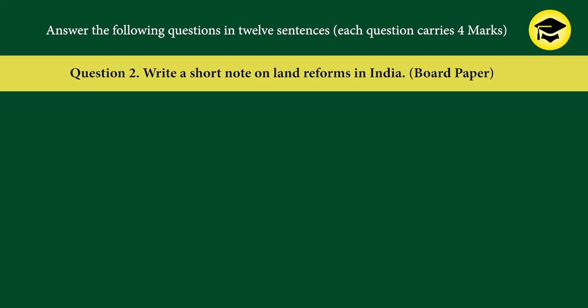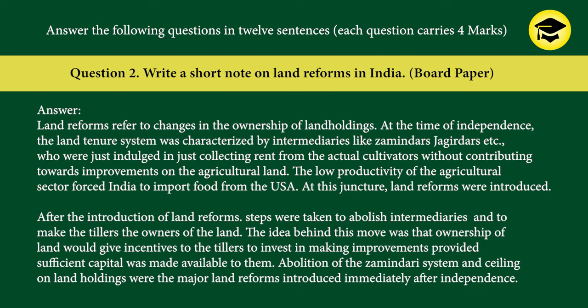Question 2: Write a short note on land reforms in India. Answer: Land reforms refer to changes in the ownership of land holdings. At the time of independence, the land tenure system was characterized by intermediaries like zamindars and jagirdars who were just collecting rent from actual cultivators without contributing towards improvements on the agricultural land. The low productivity of the agricultural sector forced India to import food from the USA. Land reforms were introduced to abolish intermediaries and make the tillers the owners of the land, giving them incentives to invest in improvements. Abolition of the zamindari system and ceiling on land holdings were the major land reforms introduced after independence.